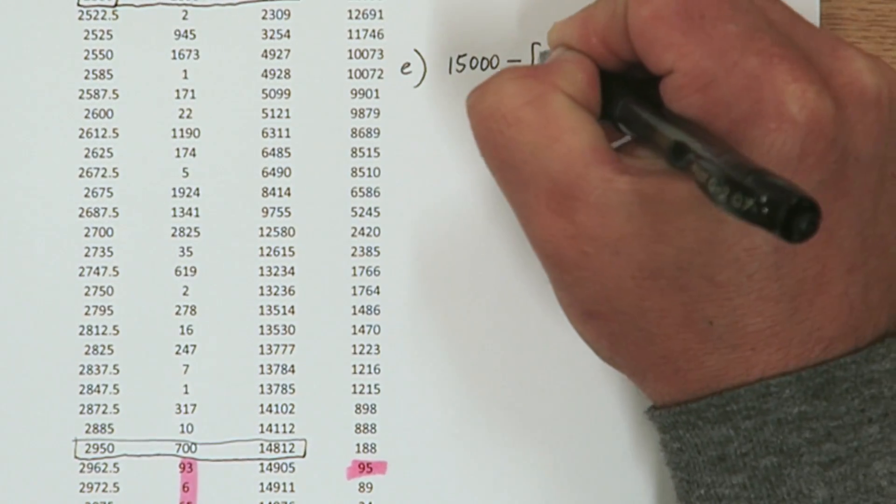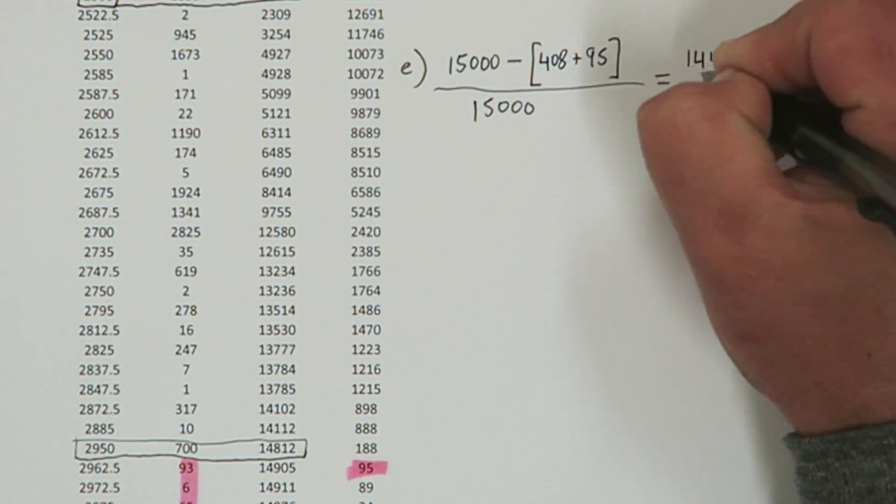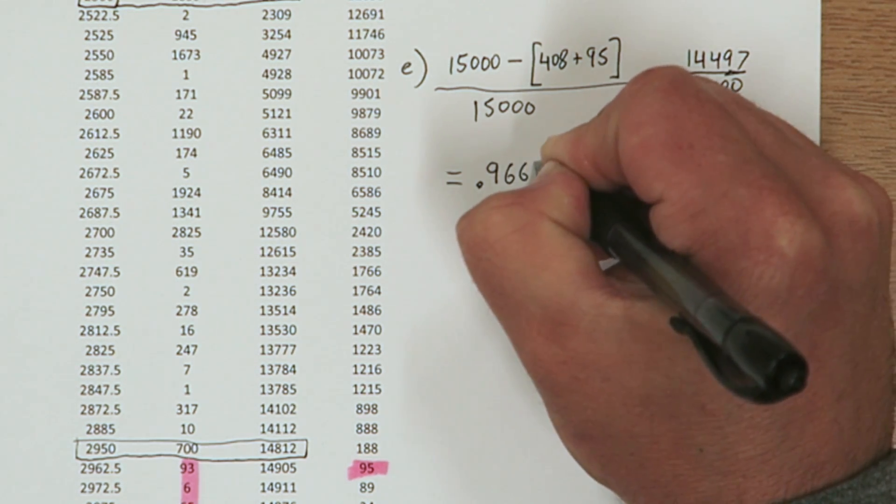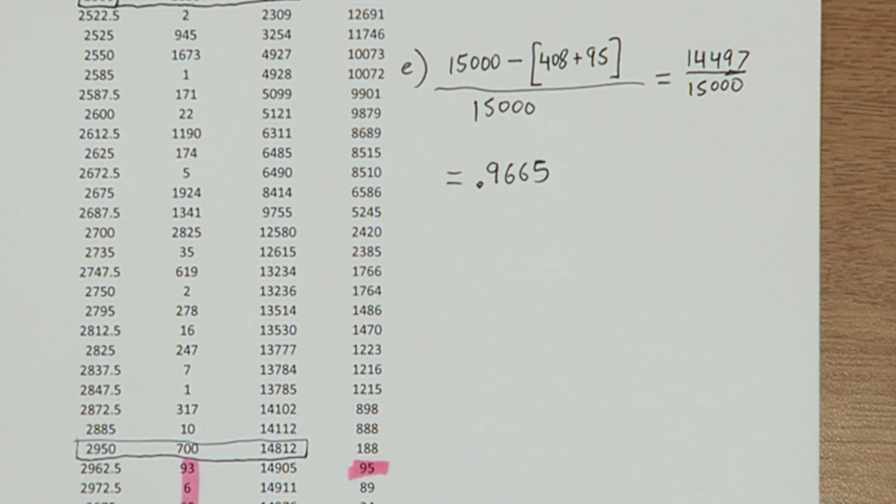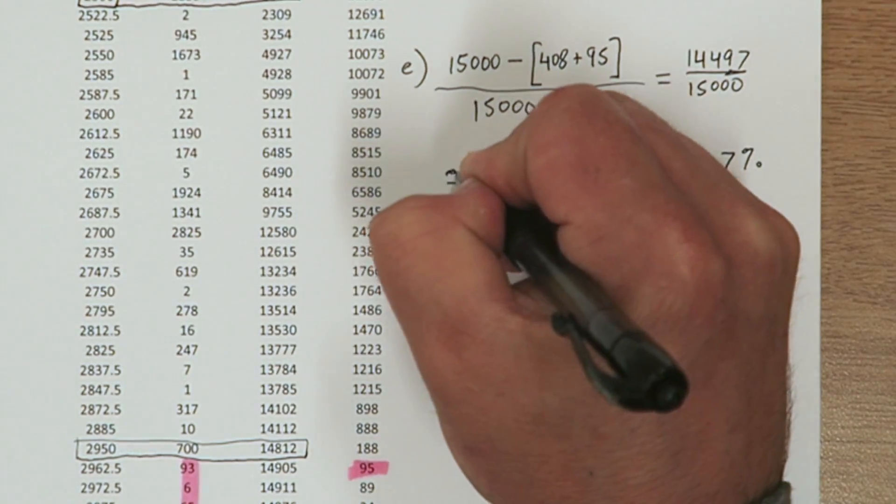So if I subtract the sum of 408 and 95 from 15,000, I see that my interval actually contains 14,497 of the 15,000 sample medians. In other words, it contains about 96.7 percent.